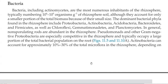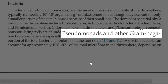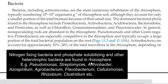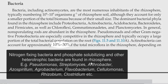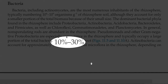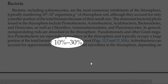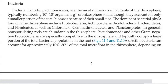In general, non-sporulating rod-shaped organisms are abundant in the rhizosphere. Pseudomonas and other gram-negative proteobacteria are especially competitive there and typically occupy a large portion of the bacterial population in the root and rhizosphere region. Apart from proteobacteria, actinobacteria is another important group, occupying about 10 to 30 percent of the total microflora of the rhizosphere region.